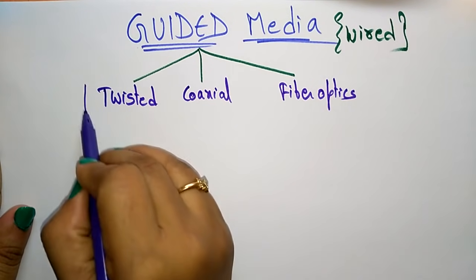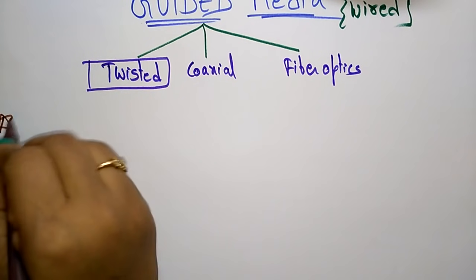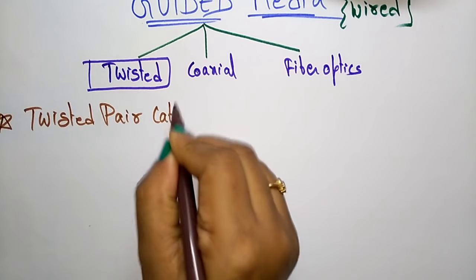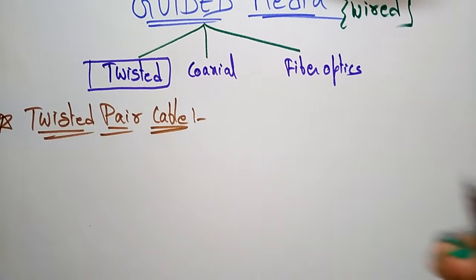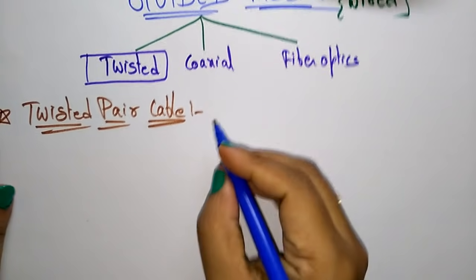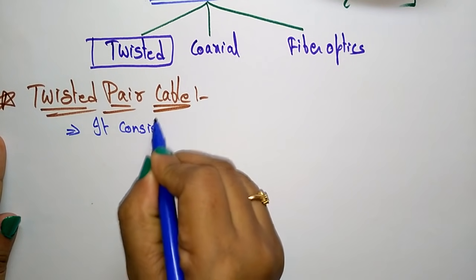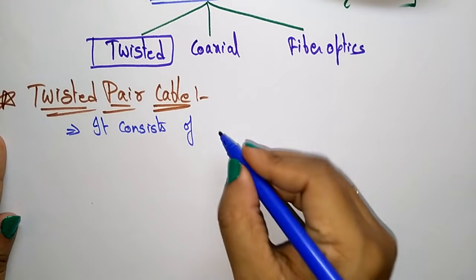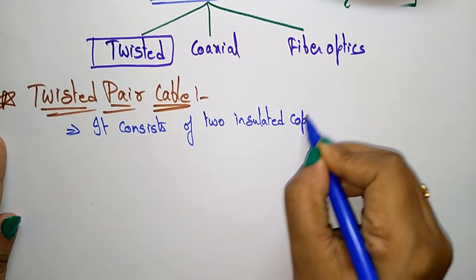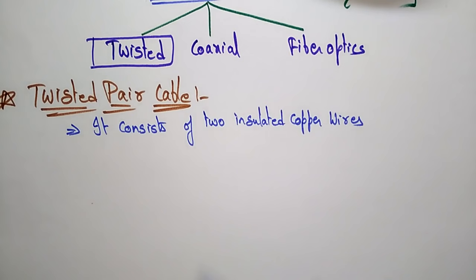Now let us see them one by one. The first one is twisted pair cable. This twisted pair cable consists of two insulated copper wires arranged in a regular spiral pattern, meaning they are twisted or rotated.